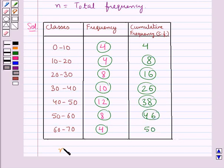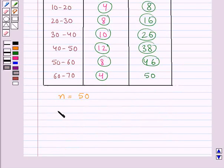Here we have n, which is the total frequency, equal to 50. Now let's find out what is n/2. This is equal to 50/2, which is 25.